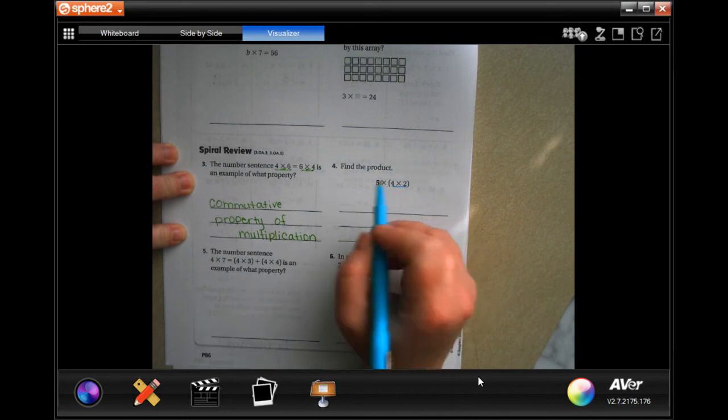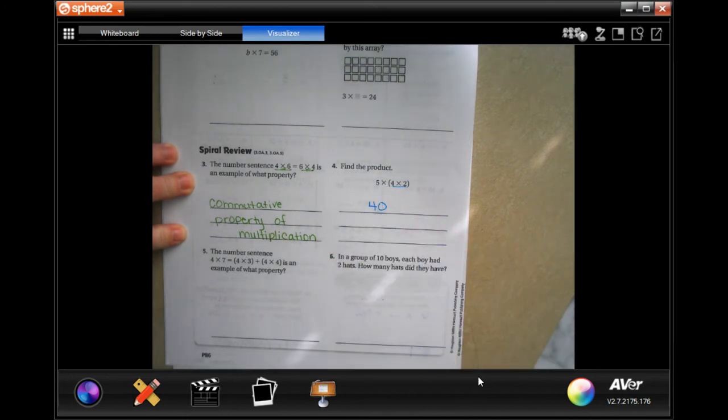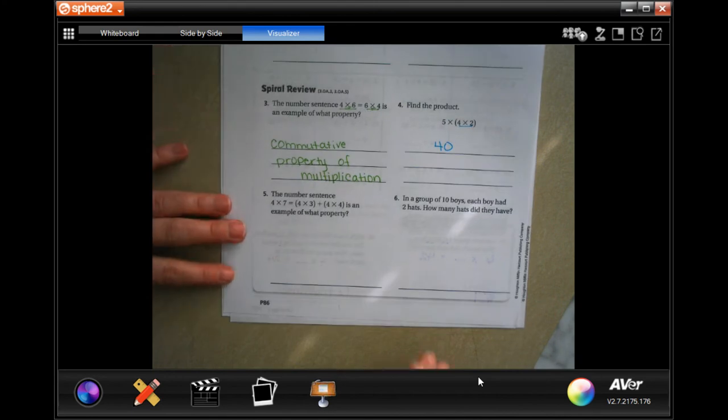So, four times two is eight. And eight times five, well, that's 40.